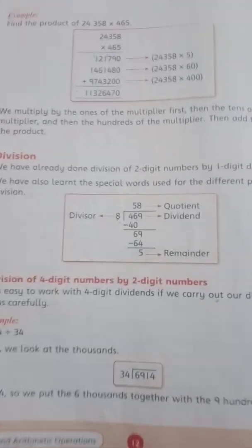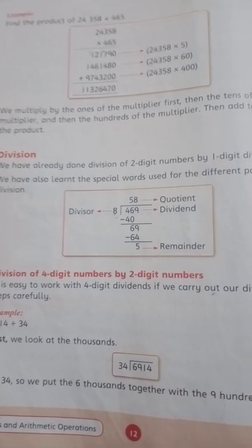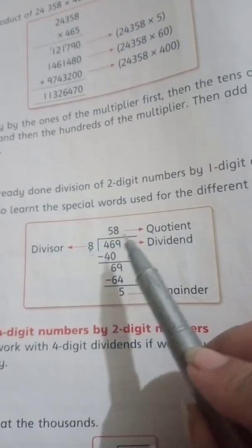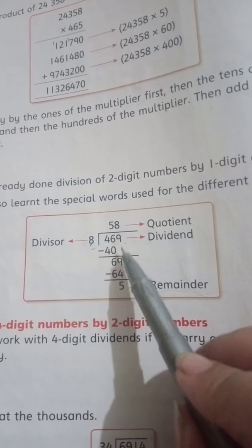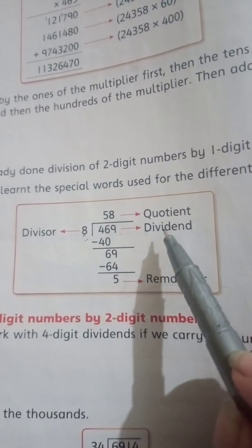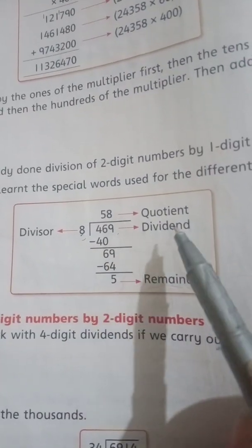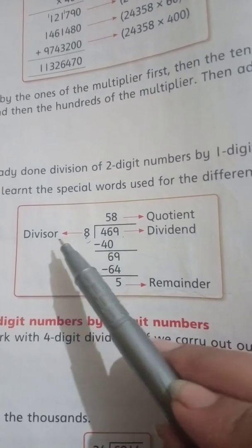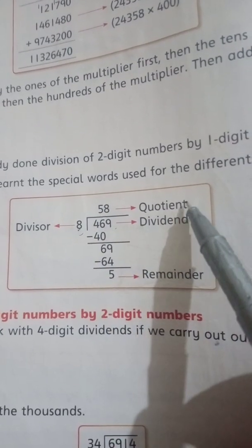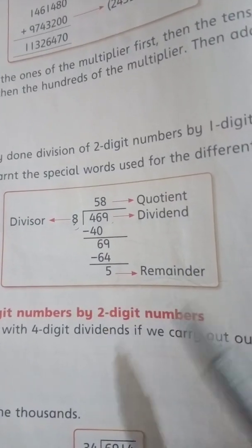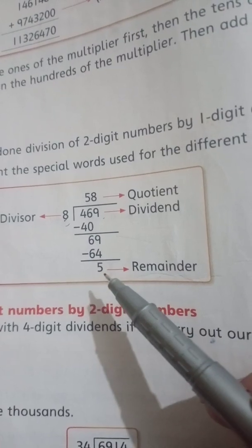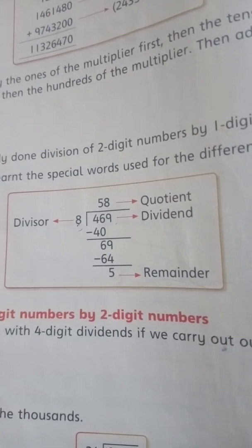On page number 12, students, like multiplication, in division every term has a special name. Here we have a question: 469 divided by 8. The number under the division sign is called the dividend. The number outside is called the divisor. The answer is called the quotient, and the leftover number is called the remainder. If there is no remainder, we call it zero remainder.